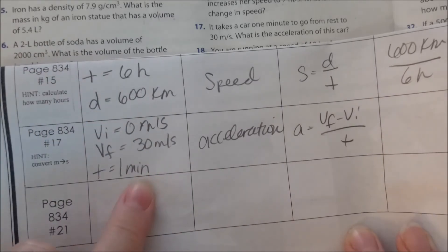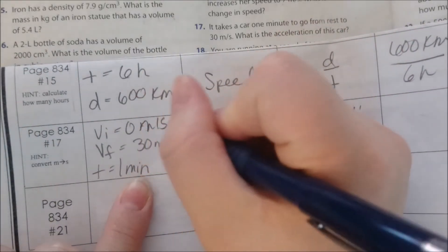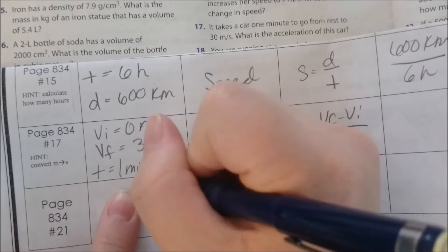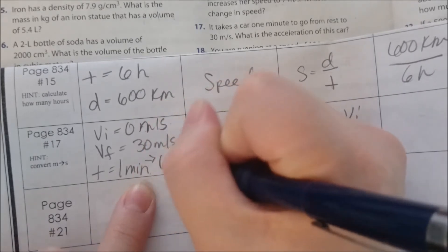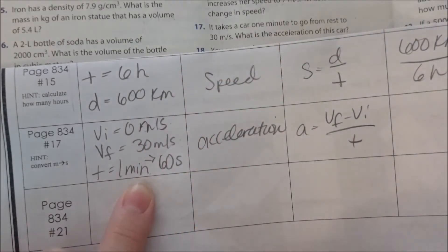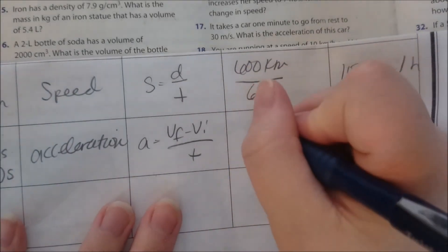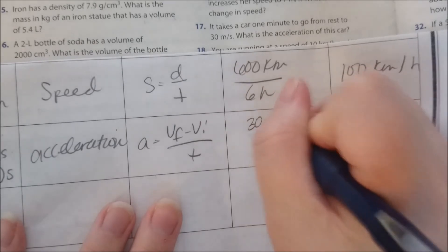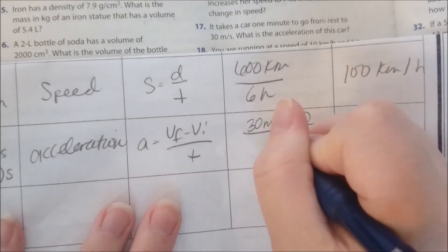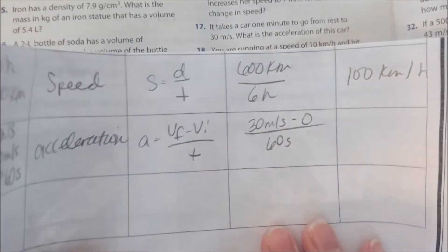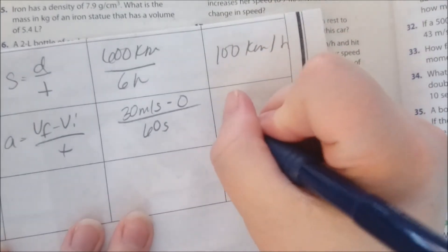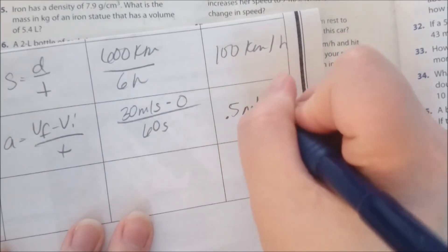One thing to notice here is that these are meters per second and this is minutes. We have to convert minutes to seconds so that everything cancels out properly. Okay, so we have VF which is 30 meters per second minus zero, divided by 60 seconds. So our acceleration is 0.5 meters per second squared.